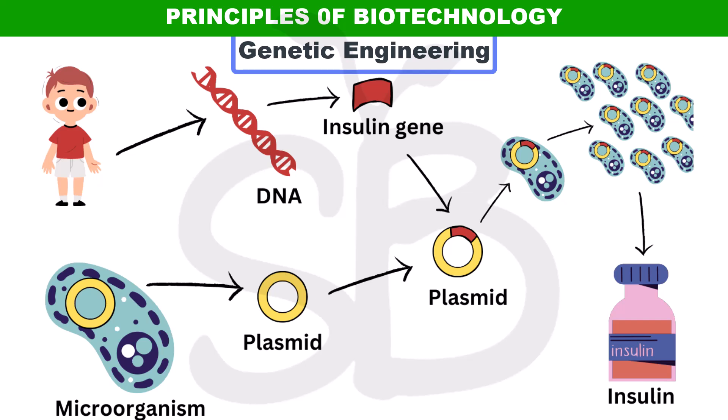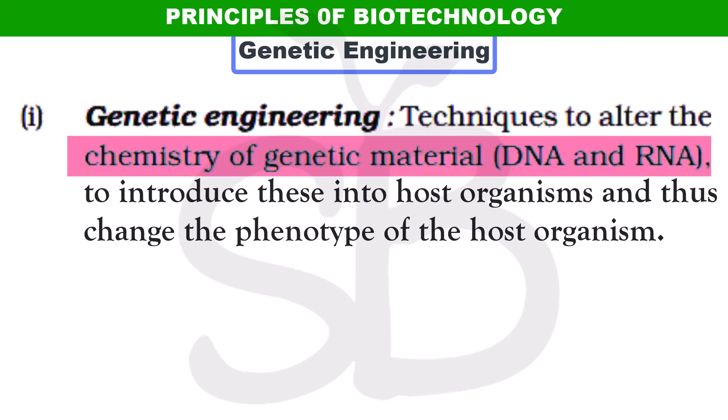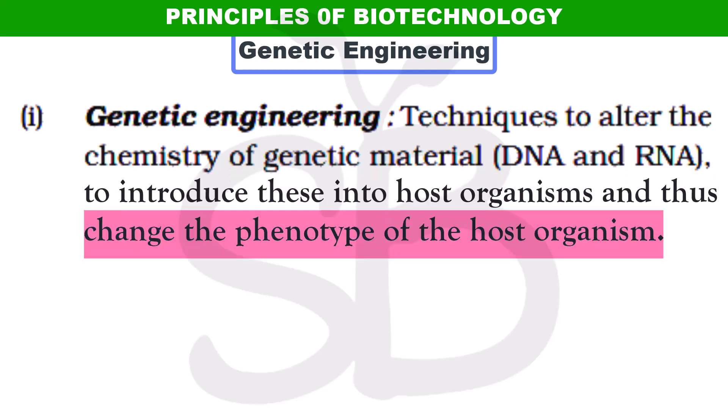Now you have to complete biotechnology in this chapter. Here we have to detail about the processes, enzymes, tools, etc. Genetic Engineering is a technique to alter the chemistry of genetic material, i.e. DNA and RNA, to introduce these into host organisms and thus change the phenotype of the host organism.